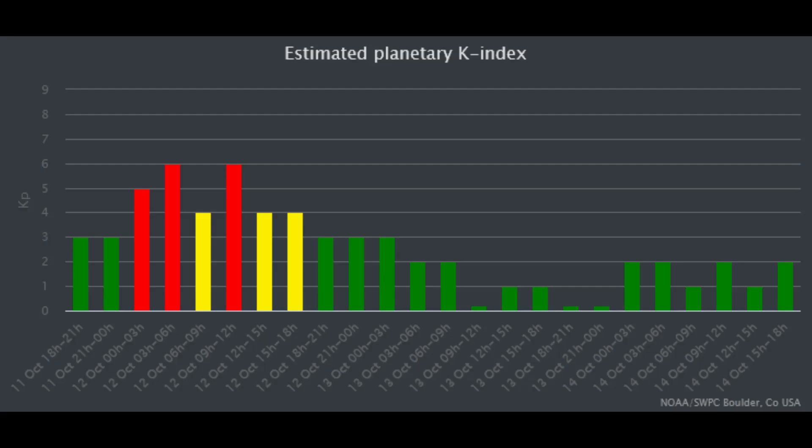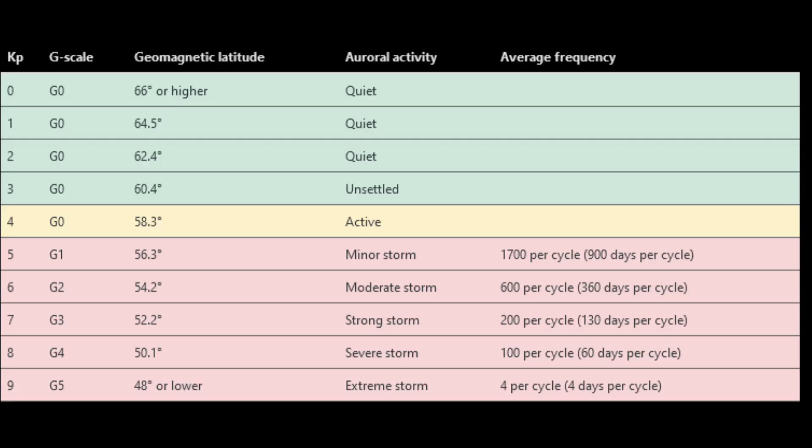On this K-index chart, we see on the 12th it reached up to 6 on that day, which translates into a moderate geomagnetic storm that day.